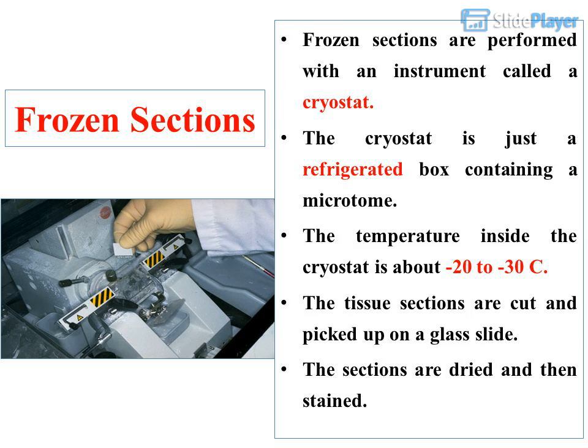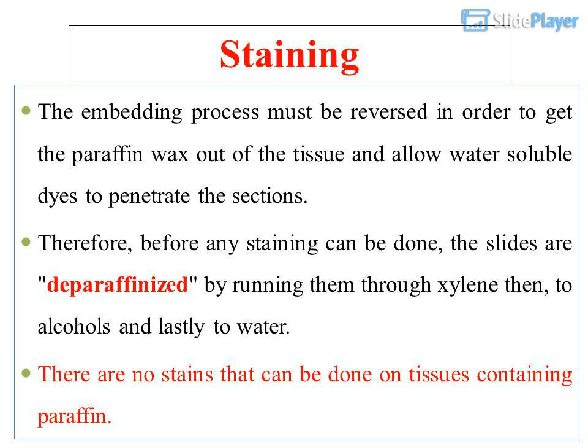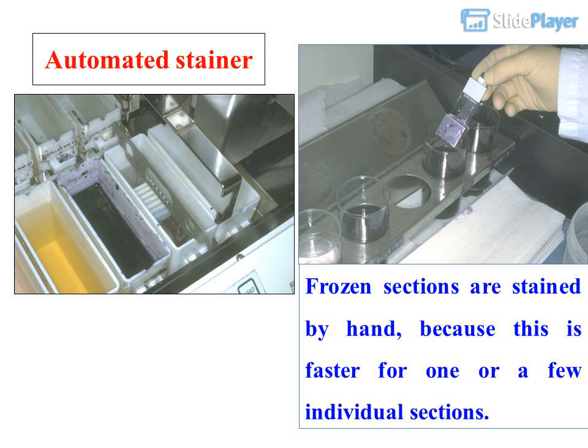Staining: The embedding process must be reversed in order to remove the paraffin wax from the tissue and allow water-soluble dyes to penetrate the sections. Therefore, before any staining can be done, the slides are de-paraffinized by running them through xylene, then through alcohols, and lastly to water. There are no stains that can be done on tissues containing paraffin. Frozen sections are stained by hand because this is faster for one or a few individual sections.